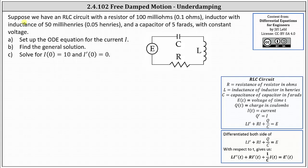Welcome to an example on how to set up and solve a differential equation that models the current in an RLC circuit. Suppose we have an RLC circuit with a resistor of 100 milliohms, or 0.1 ohms, an inductor with inductance of 50 millihenries, or 0.05 henries, and a capacitor of 5 farads with constant voltage. Part A: set up the ODE equation for the current I.